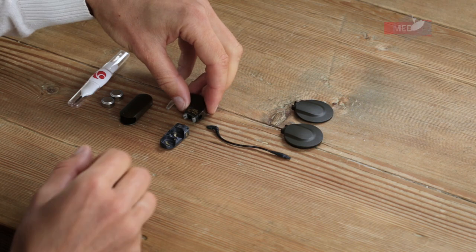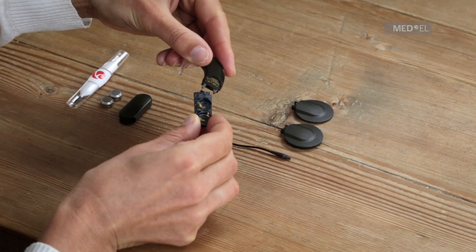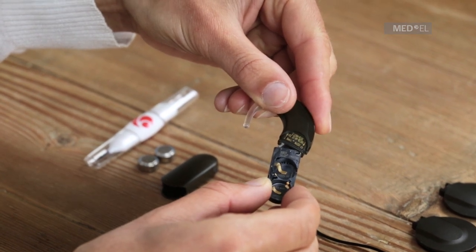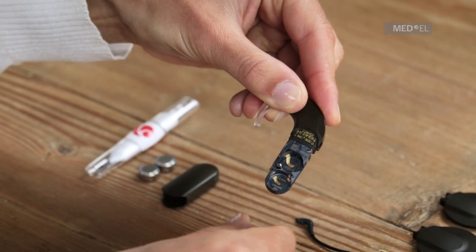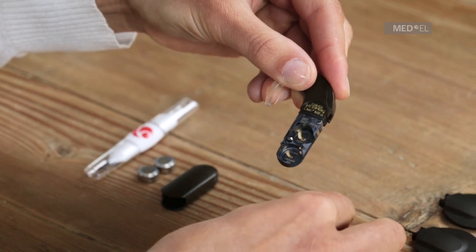To assemble your Sonnet, begin by attaching the battery pack frame to the control unit. Insert the hook on the control unit into the matching groove in the battery pack frame and push against the back of the battery pack frame until the release lever engages.